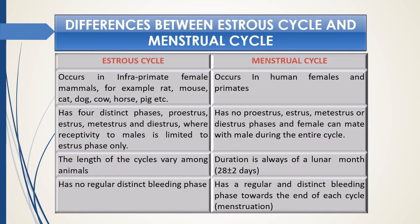The estrus cycle occurs in infraprimate female mammals — for example, rat, mice, cat, dog, cow, horse, pig, etc. The menstrual cycle occurs in human females and primates only.